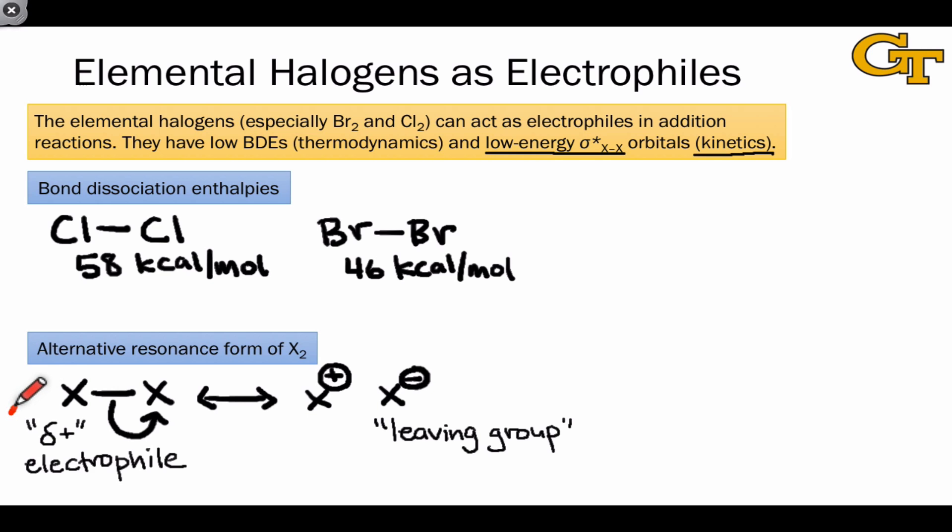Some nucleophile, in this lesson an alkene, donates electron density to one of the X atoms while the other departs with a pair of electrons. We'll see the same type of reactivity in reactions of aromatics, which also contain nucleophilic double bonds, in a later lesson.